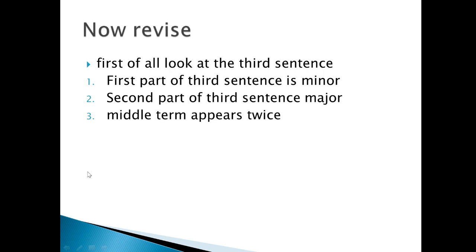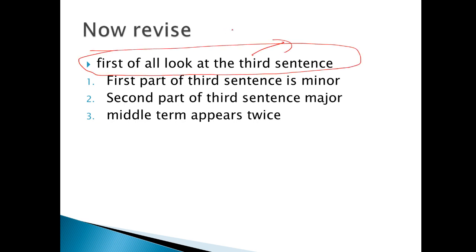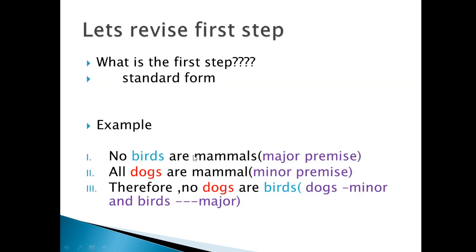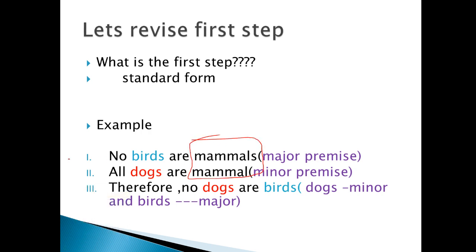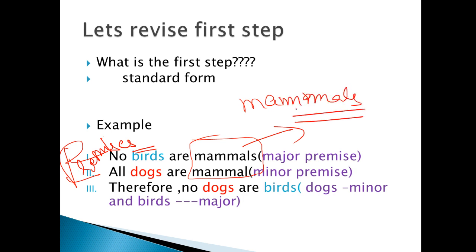तो revise कर लेते हैं. सबसे पहले हमें देखना होता है third sentence को — जिसे हम conclusion बोलते हैं. उसके बाद, third sentence का जो first part होता है उसे हम minor बोलते हैं, और जो second part होता है उसे हम major बोलते हैं. इसके अलावा होता है middle term — जो दो बार appear करती है, यानी दोनों premises में आती है. जैसे यहाँ 'mammals' दो बार आया — वो हमारा middle term है. अभी सिर्फ पहला step देखना है.